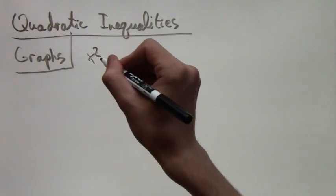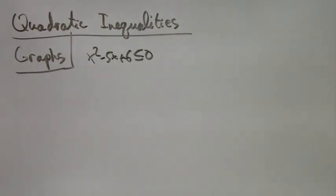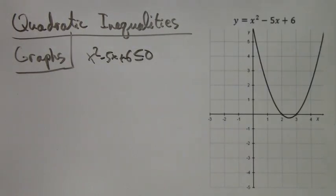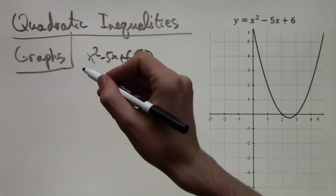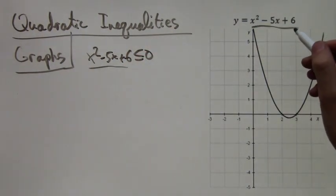So let's say you have this quadratic inequality: x squared minus 5x plus 6 is less than or equal to 0. We graph y equals x squared minus 5x plus 6, the left-hand side of this inequality.